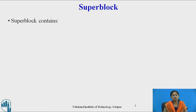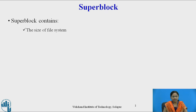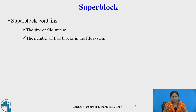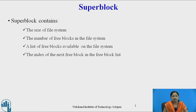Let us see what a super block is. As we already know, the super block contains the whole information about the file system, so it has many fields. The first field in the super block is the size of the file system — the complete size of the file system. Then, the number of free blocks in the file system — how many blocks are free — is stored in the super block. It also contains a list of free blocks available on the file system, and the index of the next free block in the free block list.